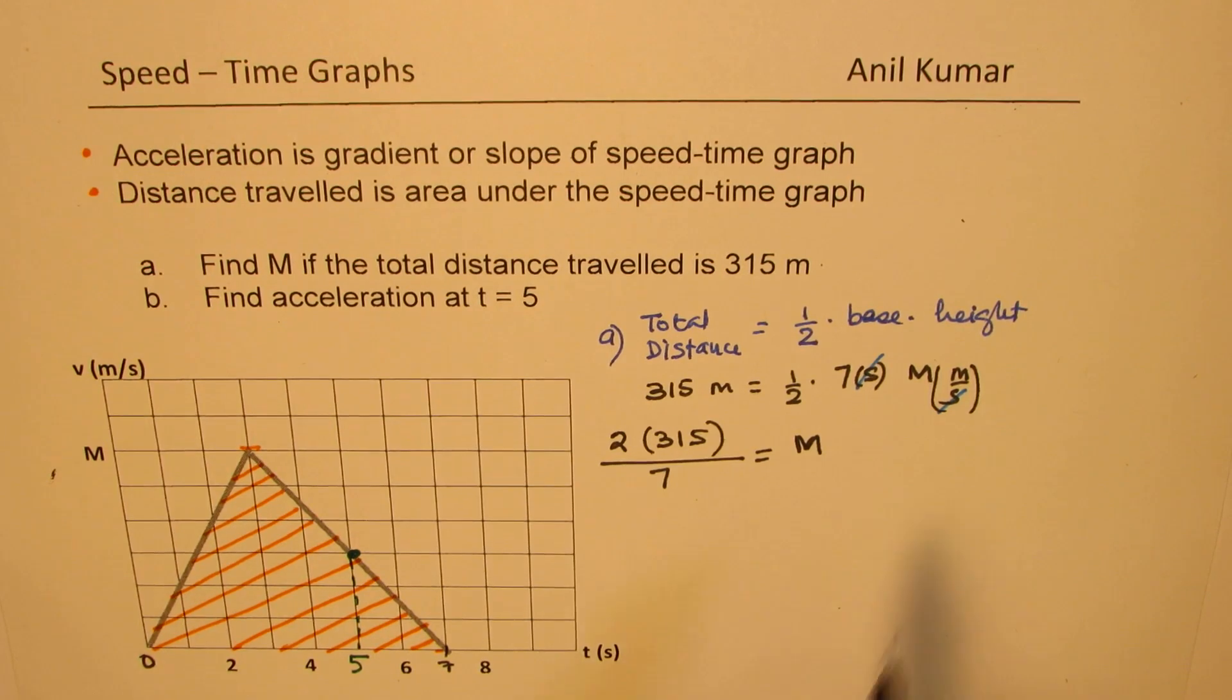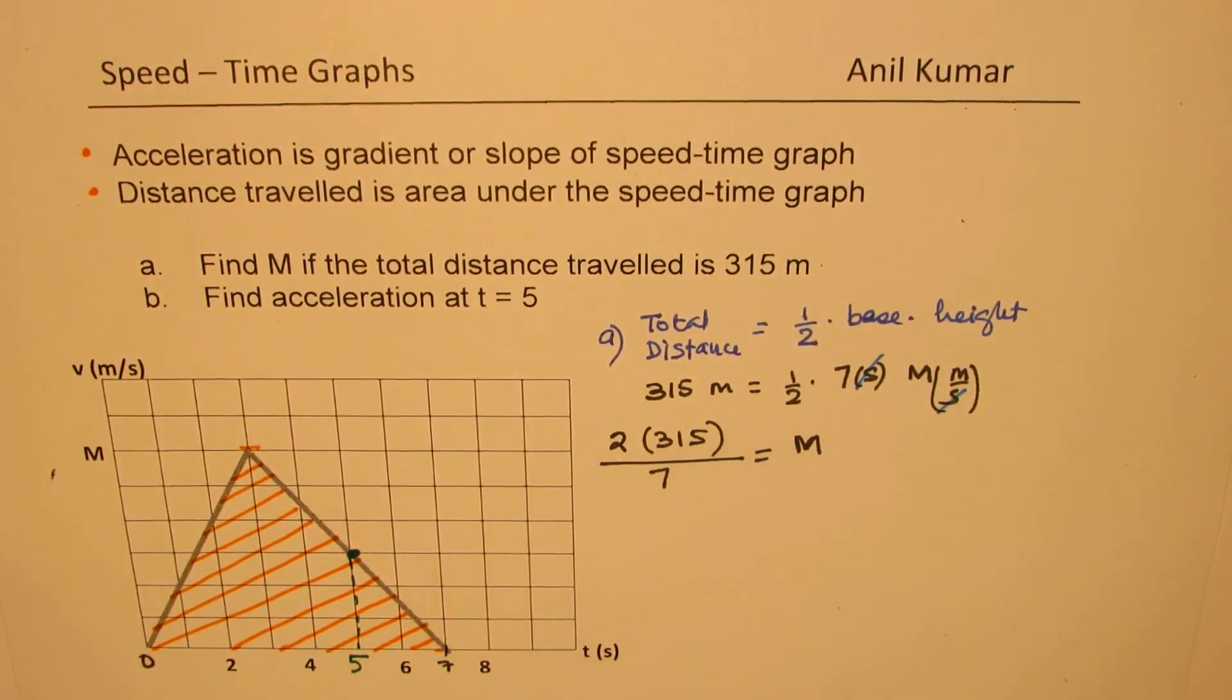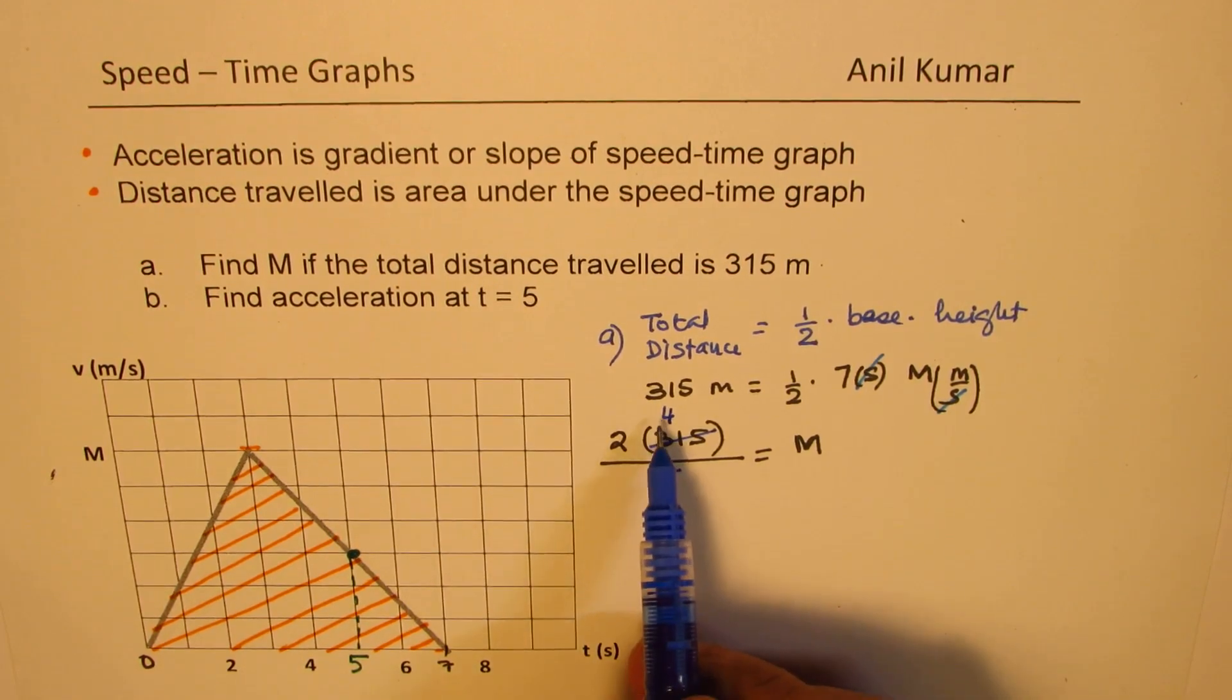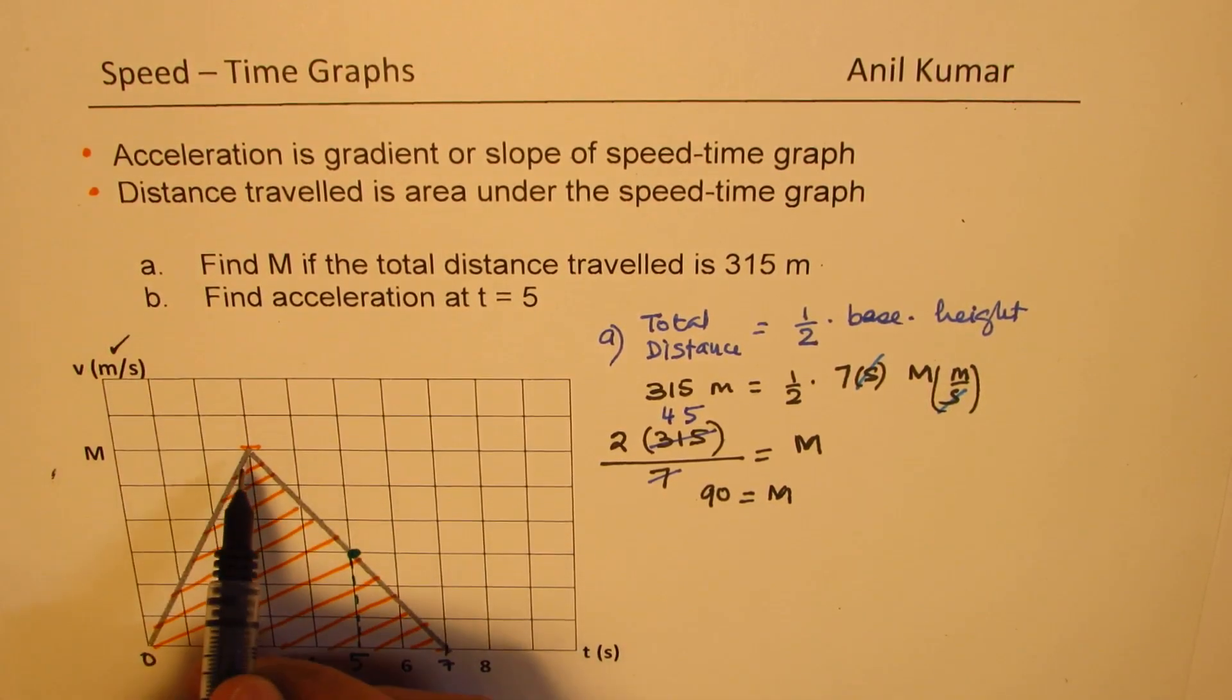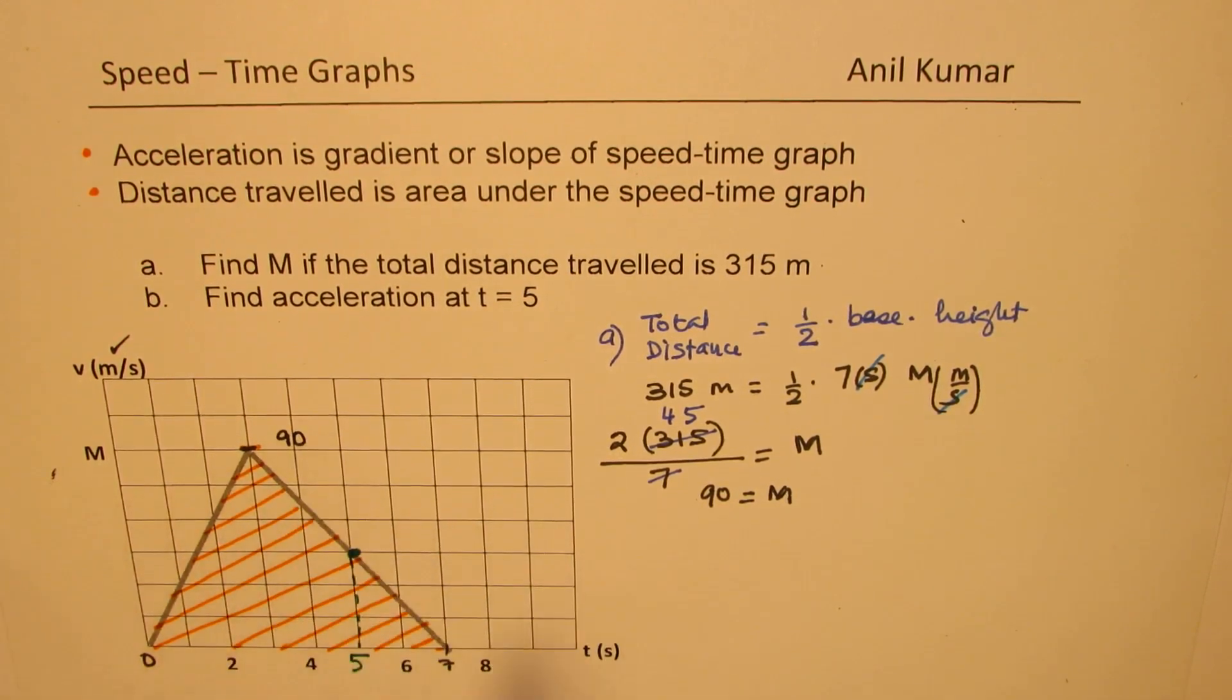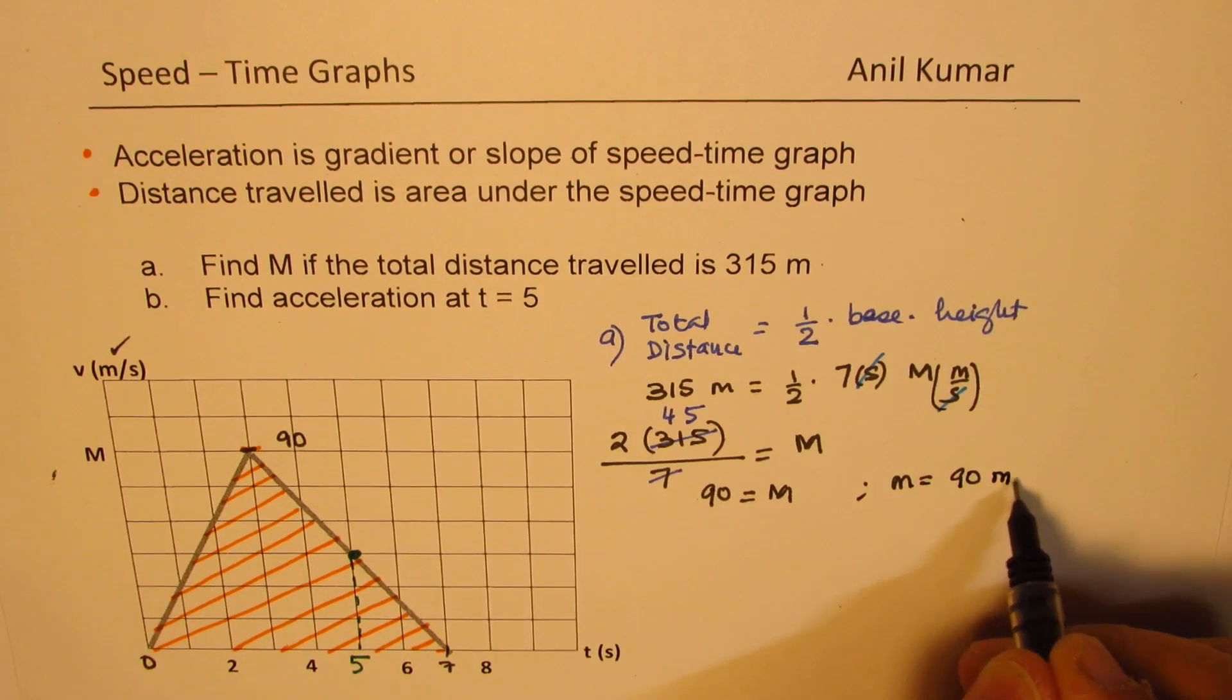So now, dividing by 7, 7 times, let's do this, or you could just multiply and then divide, either way. So let's divide first by 7. 7 times 4 is 28. And then we have 28, and we have 35. So 35 goes 5 times. So from here, we get m as equal to 90. So we use the units meters per second. So we get this value as 90. So that is part A. So we get m equals to 90 meters per second.